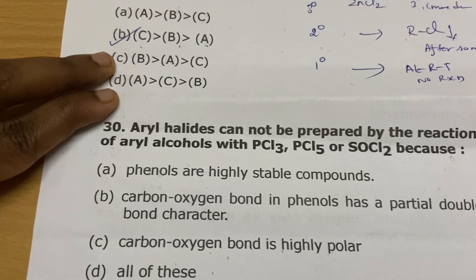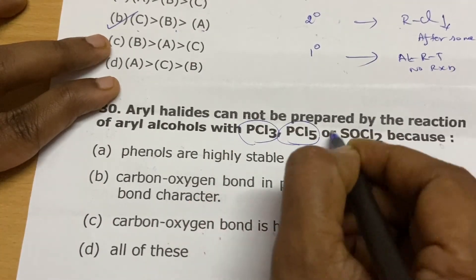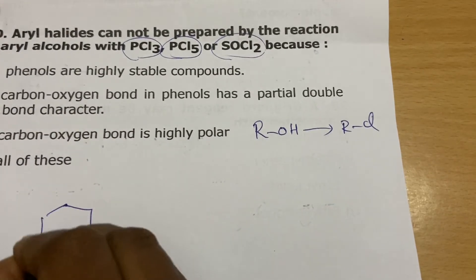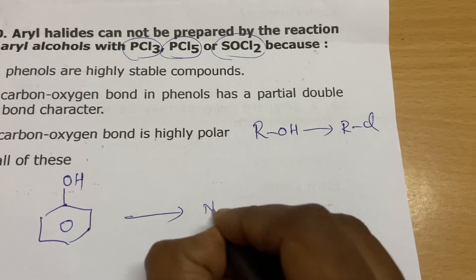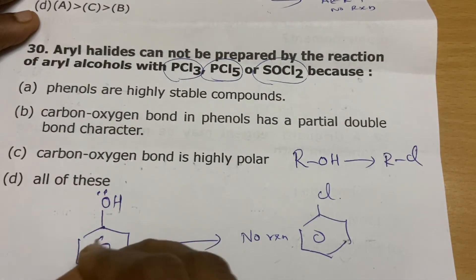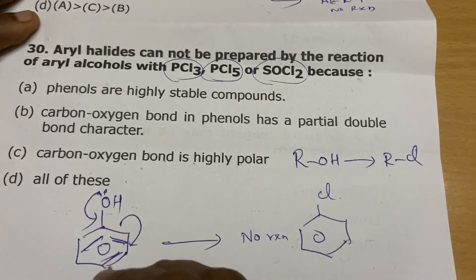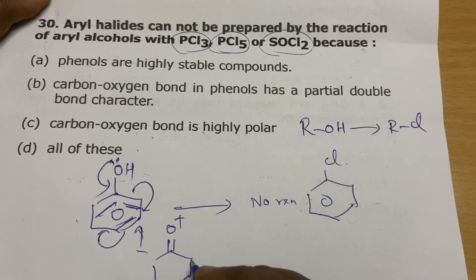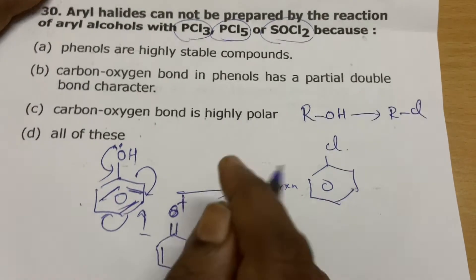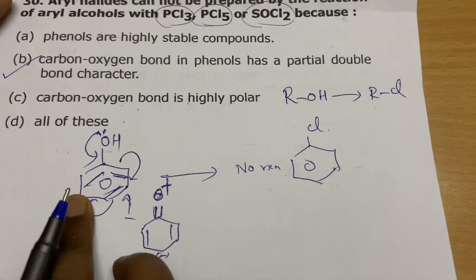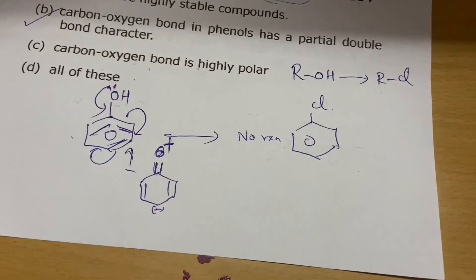Aryl halides cannot be prepared by reaction of aryl alcohols with these reagents. With aliphatic systems you can easily do this, but with aromatic alcohol such as phenol there is no reaction. Oxygen has a lone pair involved in resonance with the ring, creating partial double bond character between oxygen and carbon. This makes the bond very strong and it cannot be broken, so phenol cannot be converted to a chloro derivative easily.